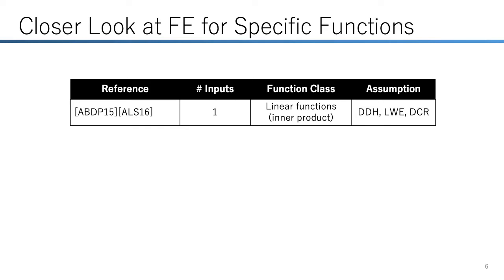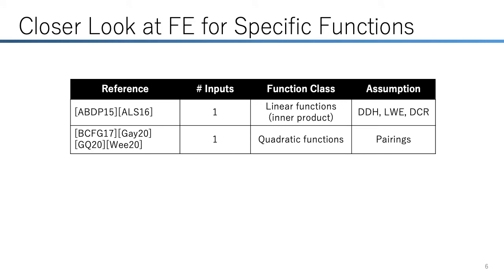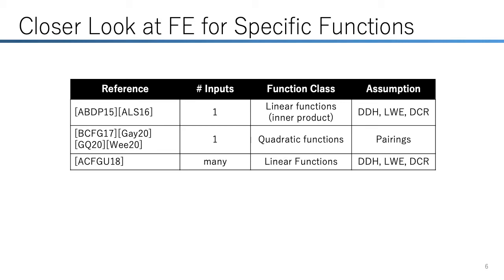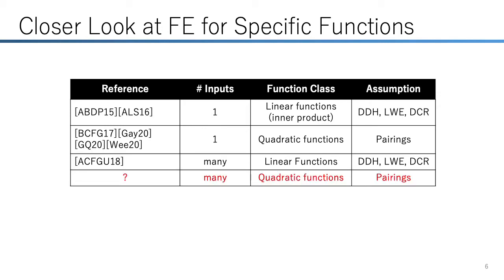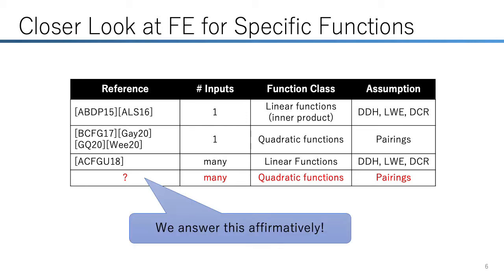Let us have a closer look at FE for specific functions. The starting point is single-input FE for linear functions, where DDH-based schemes do not use pairings. Later, single-input FE schemes for quadratic functions were also proposed using pairings. ACFGU-18 shows that linear MIFE can be generically constructed from single-input linear FE, so DDH-based linear MIFE does not need pairings. Looking at this table, a natural question is whether we can construct a quadratic MIFE scheme using pairings. The contribution of this work is to answer that question affirmatively.